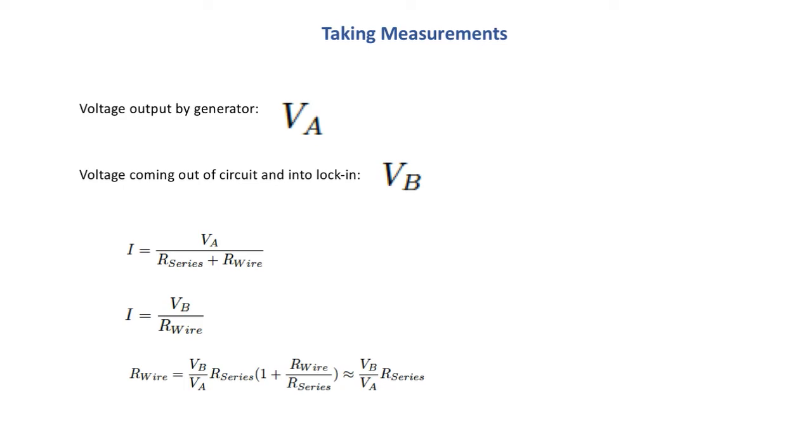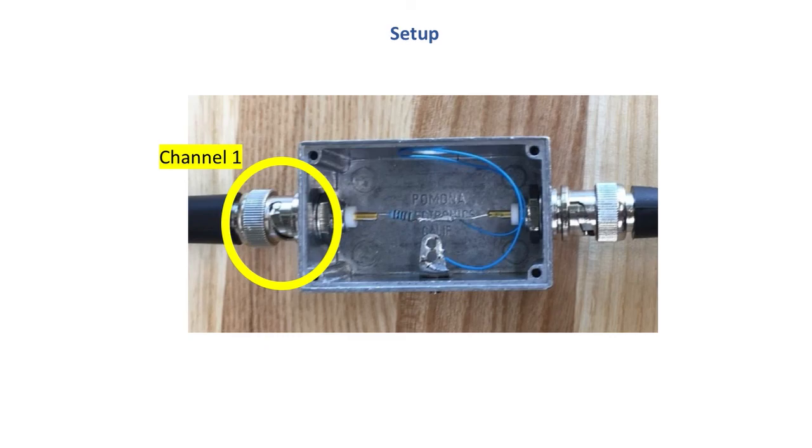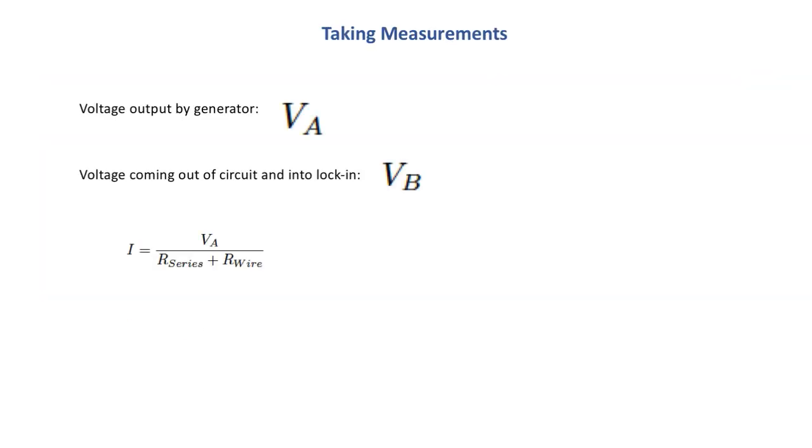Now we can show that the resistance of the wire equals VB over VA times R series. If we go back to the wire right here we see that is the resistor right here that we just put in series with the wire of interest. And so now we can measure the resistance of the wire. And thank you.